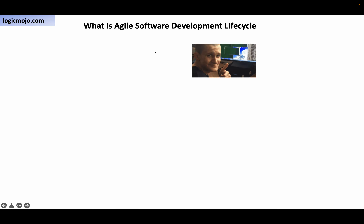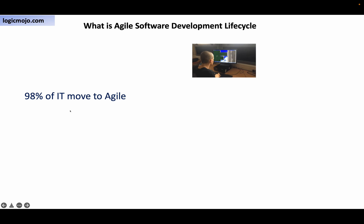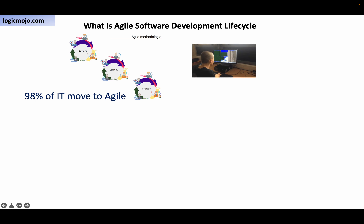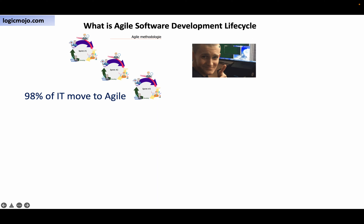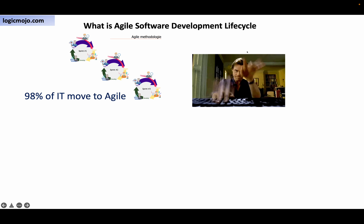As of 2022 data, almost 98% of IT companies have moved to the agile software development life cycle, where they have the regular scrum process. By adopting this agile process, companies' employees' productivity is enhanced almost double.